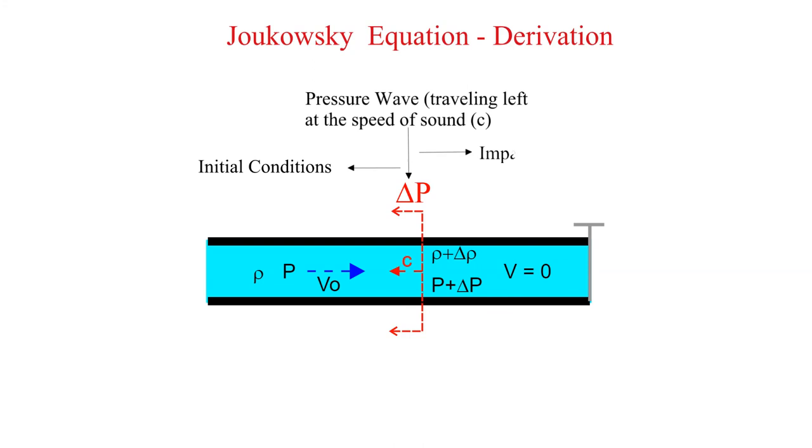The initial conditions exist in front of the wave while behind the wave we have a new density, pressure, and the velocity is zero. These conditions are indicated here. Please note that we define left to right as the positive x direction.